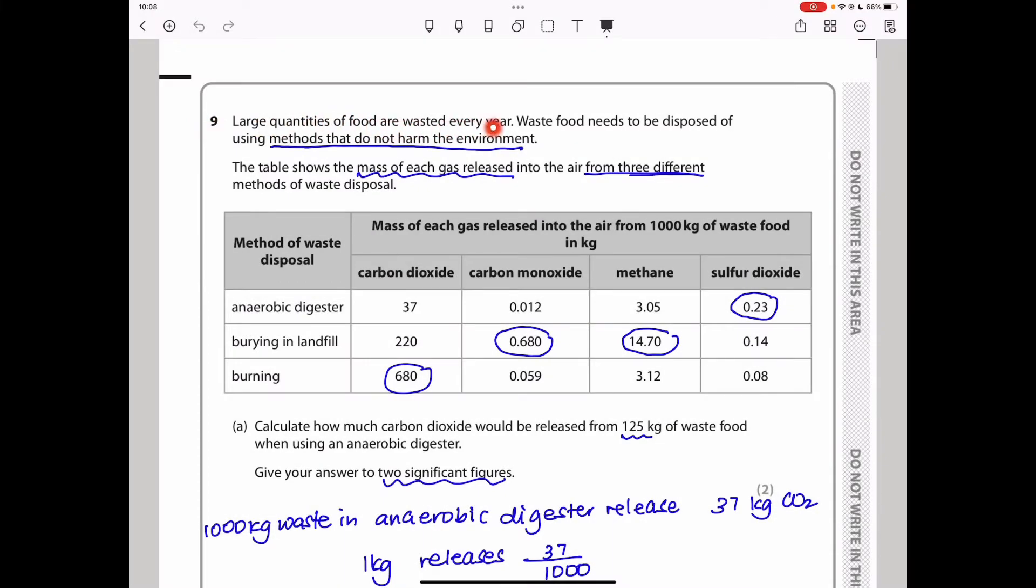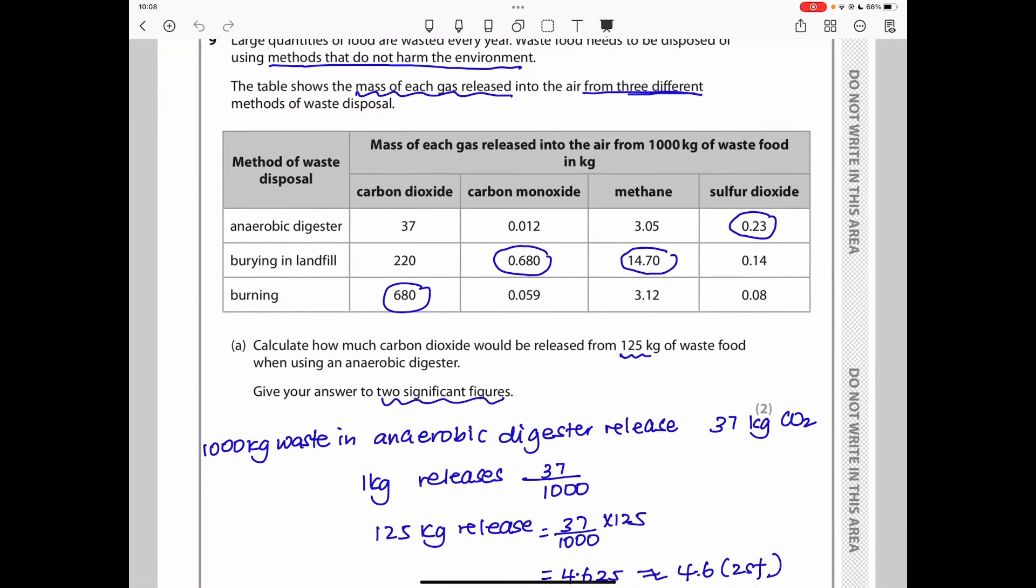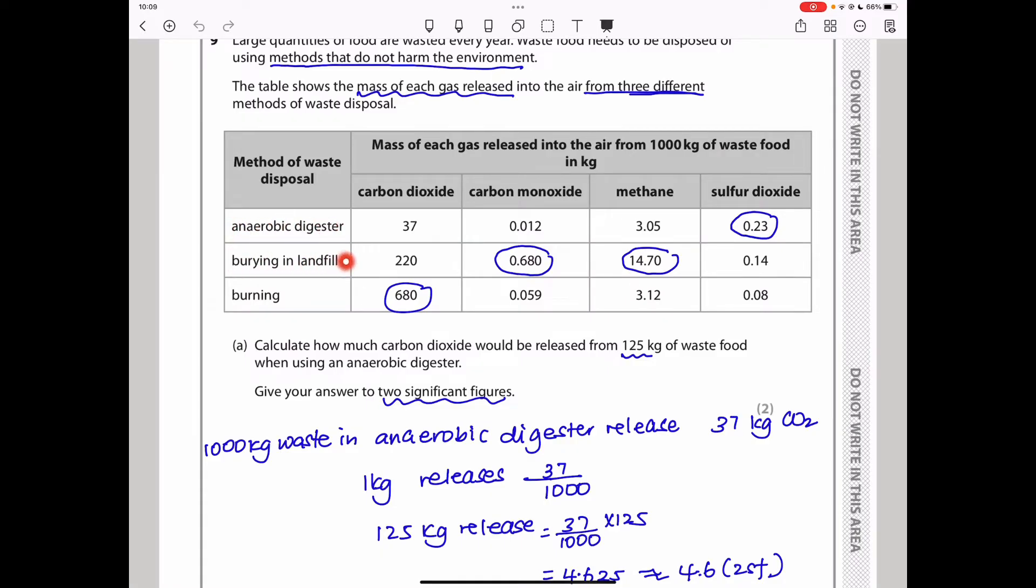Question nine. Large quantities of food are wasted every year. Waste food needs to be disposed of using methods that do not harm the environment. The table shows the mass of each gas released into the air from three different methods of waste disposal. Here we can see there is anaerobic digester, burying in landfills, as well as burning. For each there is carbon dioxide, carbon monoxide, methane and sulfur dioxide. The anaerobic digester releases the highest concentration of sulfur dioxide for 1,000 kilograms. Burying in landfills releases most carbon monoxide as well as methane. Burning releases the most carbon dioxide.